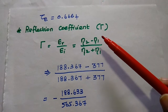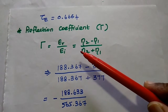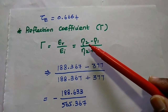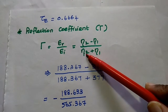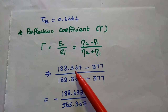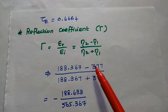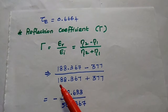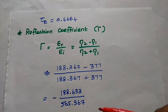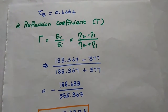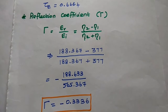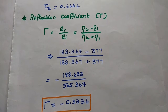Next, the reflection coefficient. Gamma is equal to ER by EI, which equals eta 2 minus eta 1 divided by eta 2 plus eta 1. So 188.367 minus 377 divided by 188.367 plus 377 gives a reflection coefficient equal to minus 0.3336.